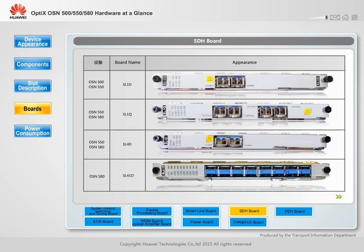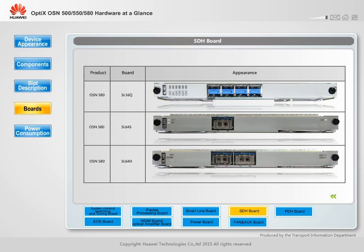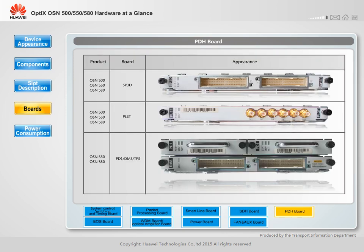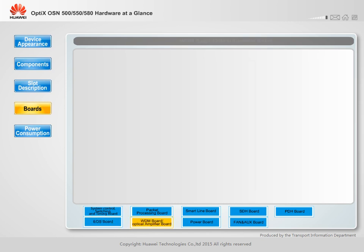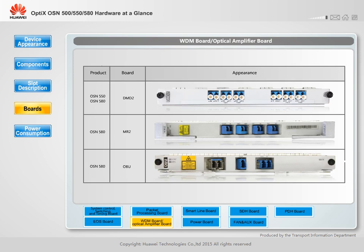An SDH board transmits SDH signals, which involves converting between optical and electrical STM-N signals and processing overheads. A PDH board encapsulates and maps received PDH services and cross-connects them to SDH lines. An EOS board encapsulates and maps received Ethernet services and cross-connects them to SDH lines. A WDM board multiplexes and demultiplexes wavelength signals, reducing fiber resources required. An optical amplifier board is used at the transmit or receive end to amplify optical signals.